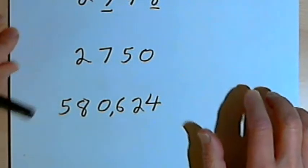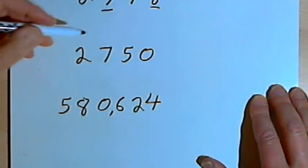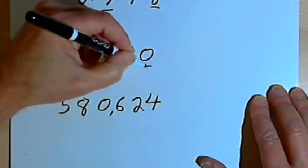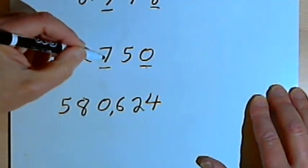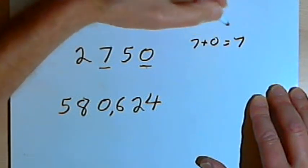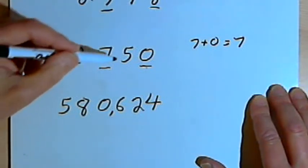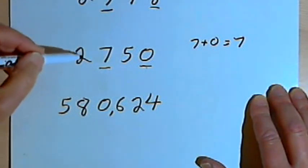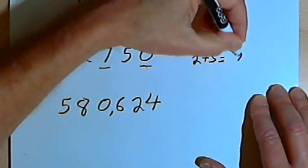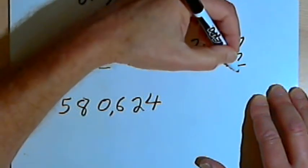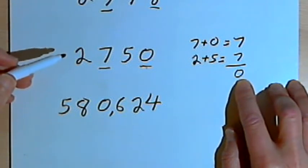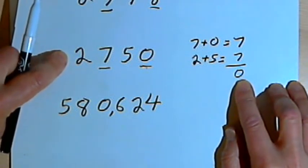Let's try that with the next number, 2,750. So the odd positions from the right are going to be the first position where the 0 is, and the third position where the 7 is. So I'll add 7 plus 0, which is just 7. And then I'll add the remaining digits in the even positions — that's where I've got a 2 and a 5. So 2 plus 5 equals 7. When I subtract, 7 minus 7 is 0. And remember, if I end up with a 0, an 11, or a multiple of 11, then the original number is divisible by 11.